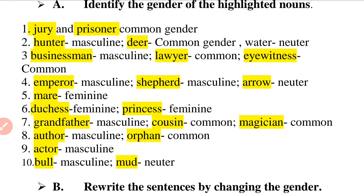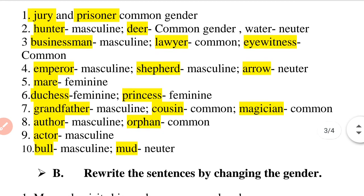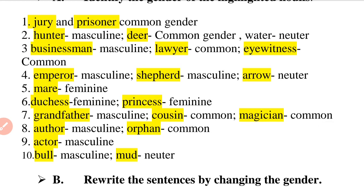Question number 2: 'The hunter felt sorry for the injured deer and gave it water to drink.' There are three highlighted nouns. Hunter is masculine gender, deer is common gender, and water is neuter gender.